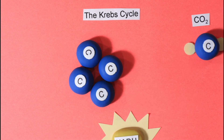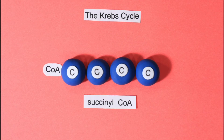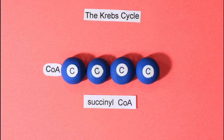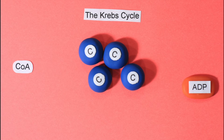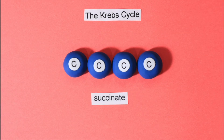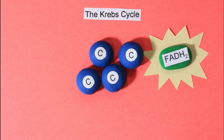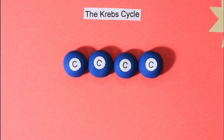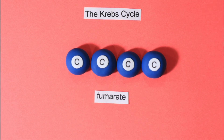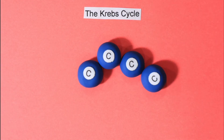The molecule loses another carbon atom, makes energy, and bonds with coenzyme A to make succinyl coenzyme A. The molecule loses coenzyme A and makes energy while rearranging into succinate. The molecule rearranges again while making energy and becomes fumarate.